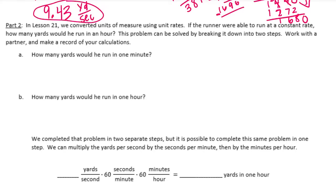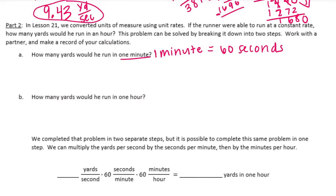Part 2: In lesson 21 we covered units of measure using unit rates. If the runner were able to run at a constant rate, how many yards would he run in an hour? We break it into two steps. First, how many yards in one minute? He runs 9.43 yards per second, and 1 minute equals 60 seconds, so we multiply 9.43 yards per second times 60 seconds per minute.